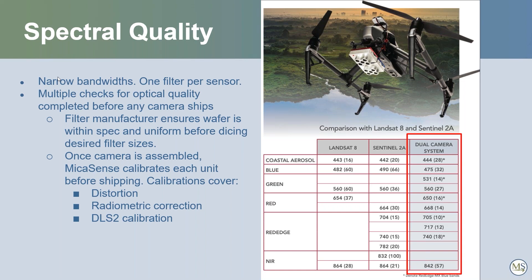Even more important is our radiometric correction and the use of calibrated reflectance panels. That allows you to radiometrically correct your data using known reflectance values of the panel across the visible and near-infrared spectrum. This is definitely the best approach for generating precise, repeatable measurements, which allow you to conduct high-quality temporal analysis. You can also see our center wavelengths in that graph in comparison to Landsat 8 and Sentinel 2A.